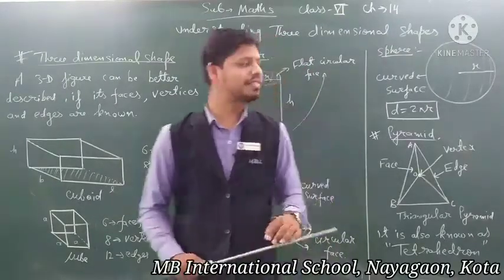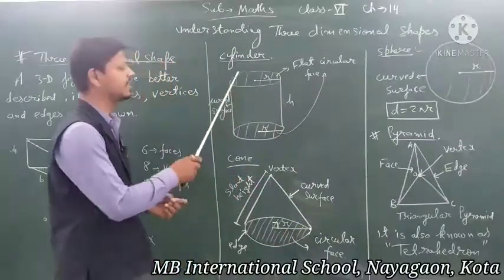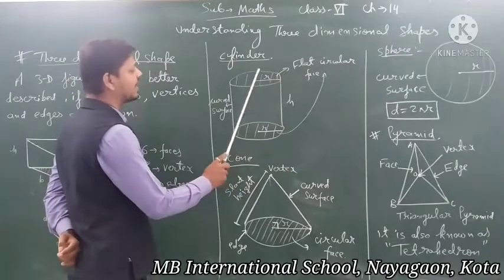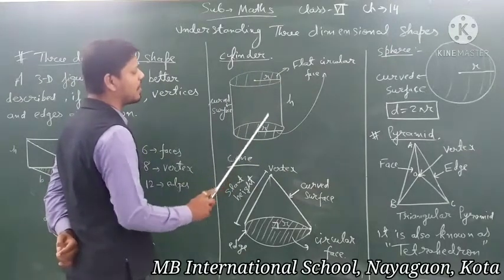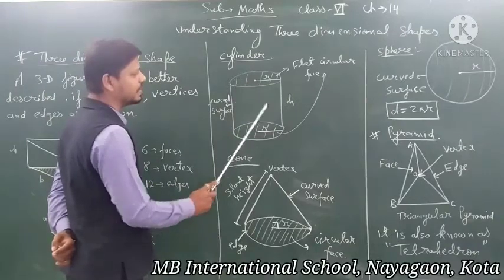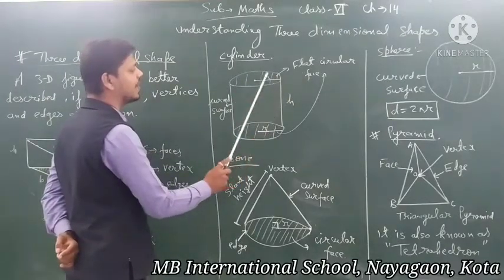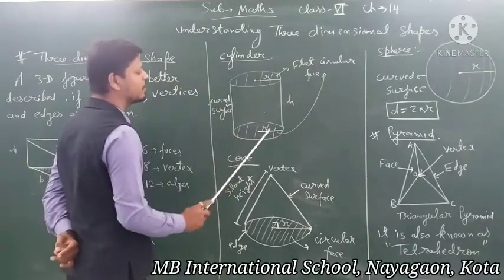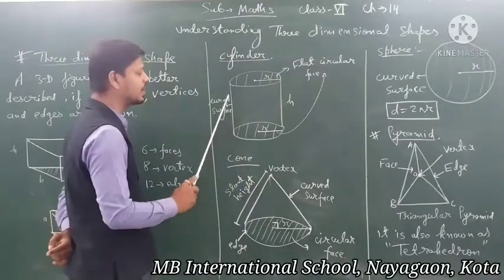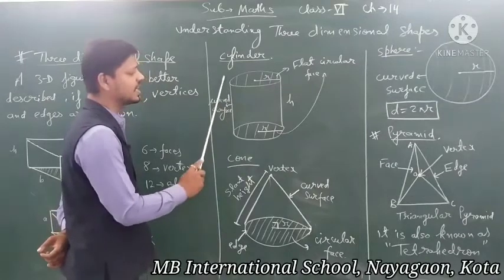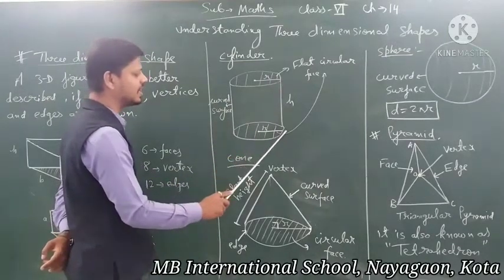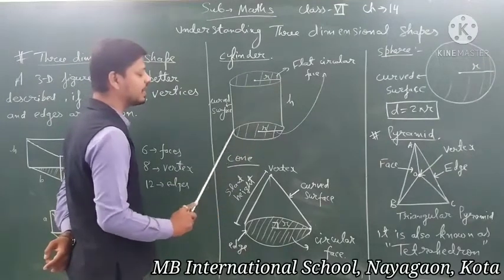After that, a cylinder. A cylinder is a combination of two flat circular surfaces on the top and bottom. The top and bottom are flat circular faces, and the middle part is a curved surface or curved face. H is the height of a cylinder and r is the radius of the base of a cylinder.